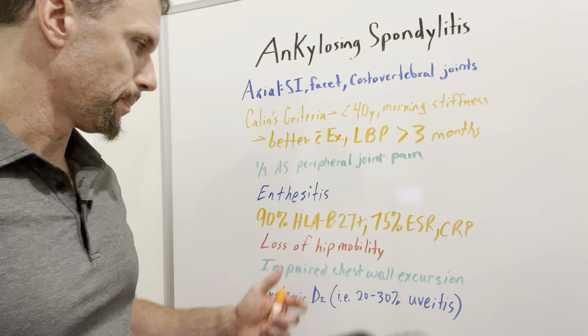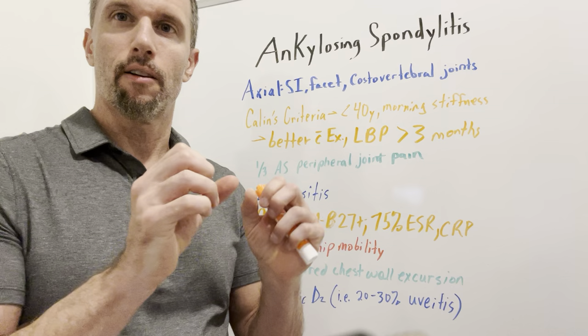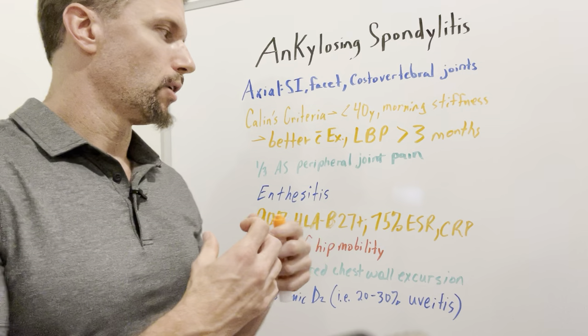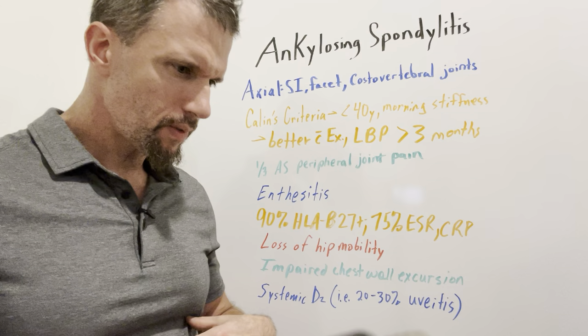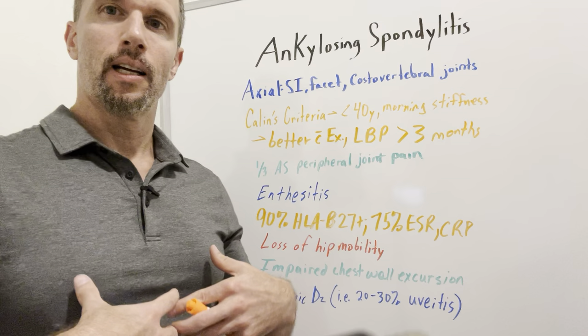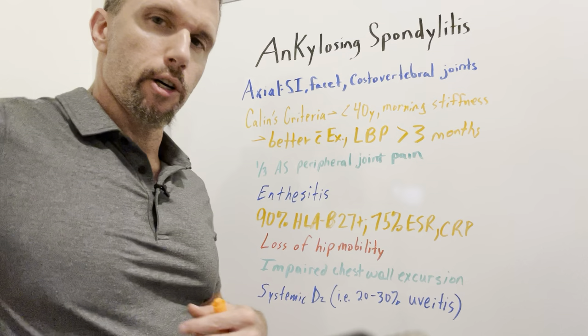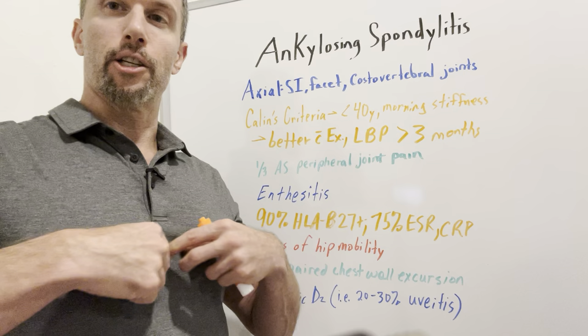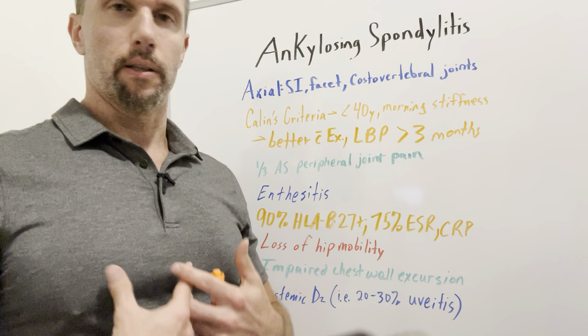There's also impaired chest wall excursion. As all these joints ossify — the ribs connecting to thoracic vertebrae, the facet joints, the annulus of the intervertebral disc attachments — you get very tight. When you inhale, you can develop a restrictive lung disease because you can't get enough volume in your thoracic ribcage to draw air in. There's a test where you measure at the fourth intercostal space with a measuring tape — have them inhale as much as they can, and it should expand more than 2.5 centimeters. With ankylosing spondylitis, they may have less than 2.5 centimeters of full excursion.